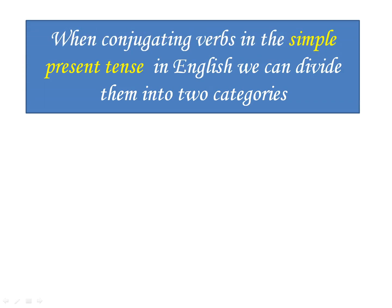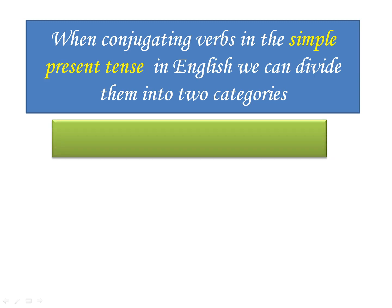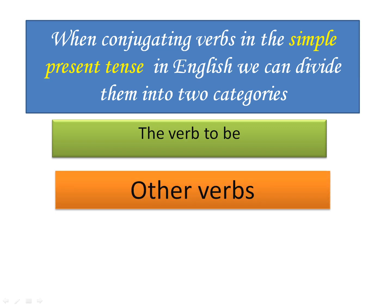When conjugating verbs in the simple present tense in English, we can divide them into two categories. The first one is the verb 'to be', which is alone and different from the other verbs. The second category is all the other verbs. Let's go through the verb 'to be' and see how different it is.